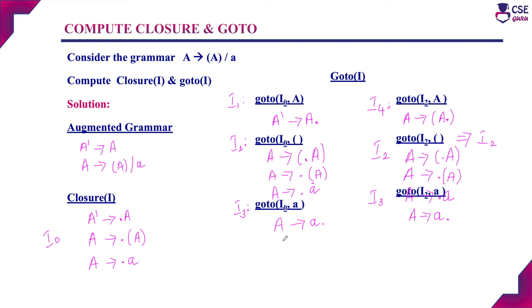Next, checking I3: A derives A dot — there is no symbol after this dot, so we cannot perform the goto operation.